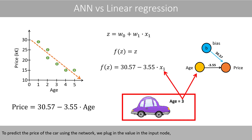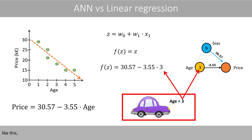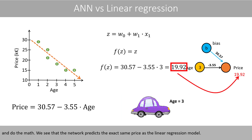We can therefore conclude that this simple neural network, without the hidden layer and with the identity activation function, is exactly the same thing as linear regression. To predict the price of the car using the network, we plug in the value in the input node and do the math. We see that the network predicts the exact same price as the linear regression model.